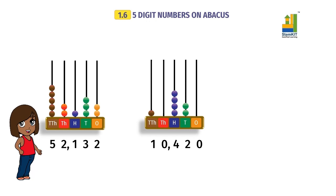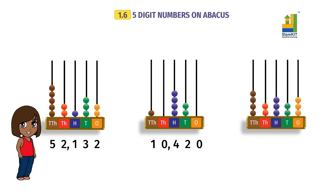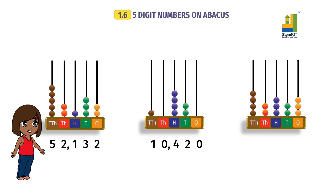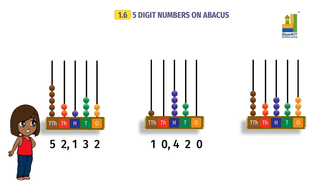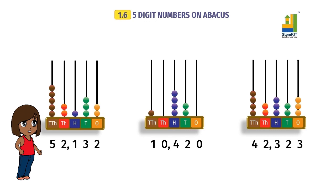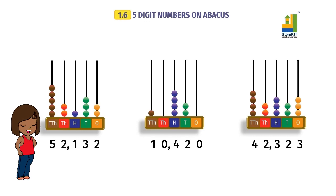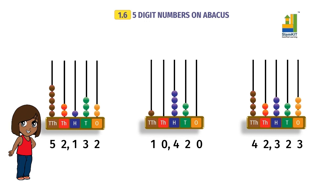Let us see another example — this is the last one, I promise. What is the number on this abacus? Say the number out aloud. Did you get it? Yes, it is forty-two thousand, three hundred and twenty-three. So now you know how to work with the abacus. Great! Now go back to the Conceptual Maths by STEM Kit book and solve some questions.